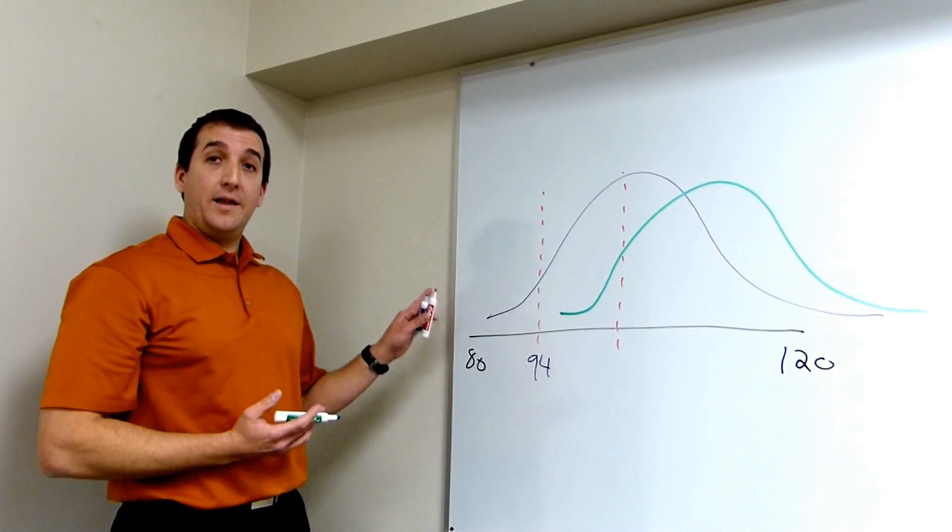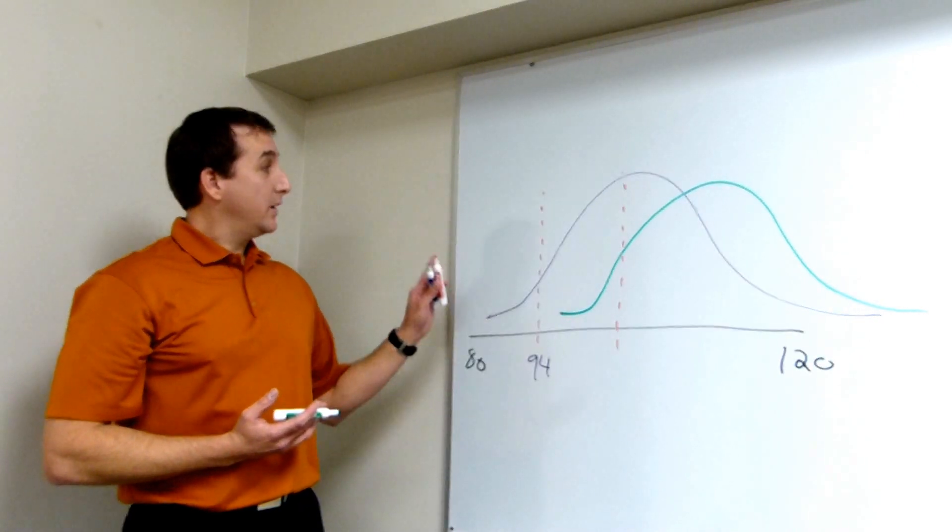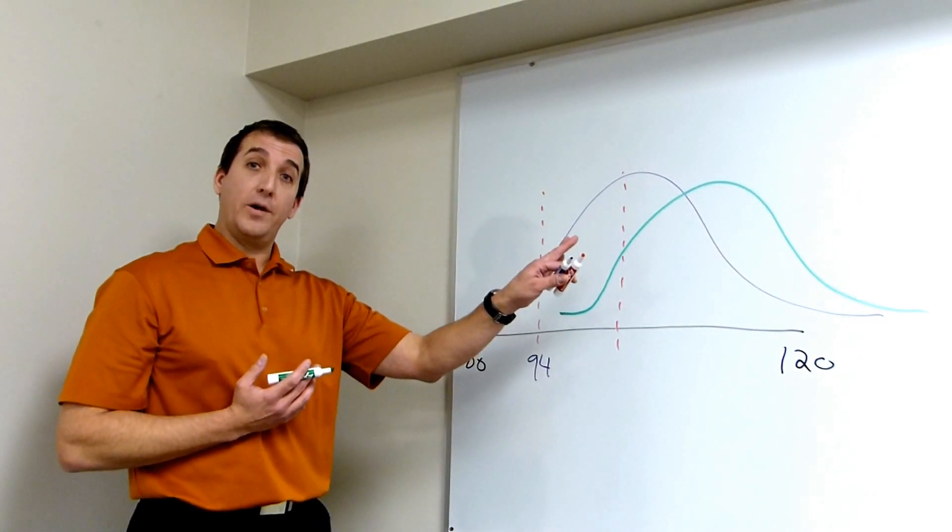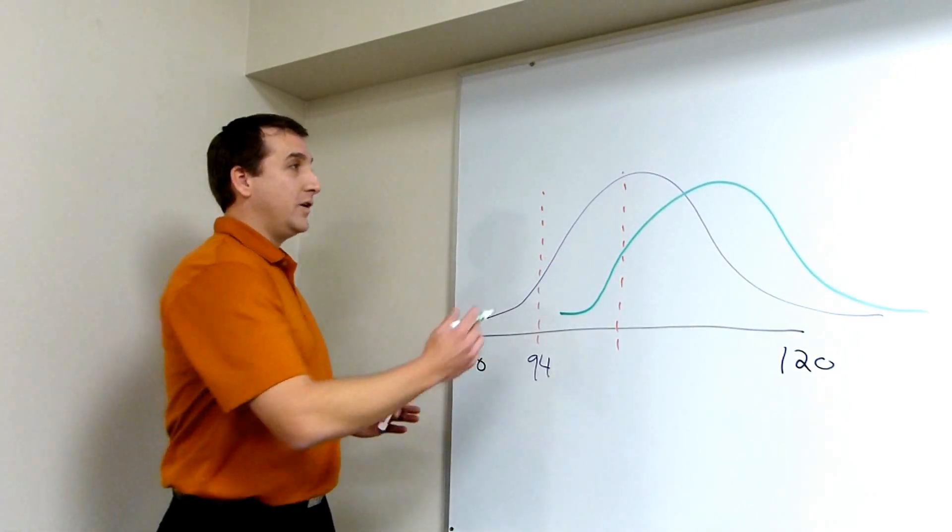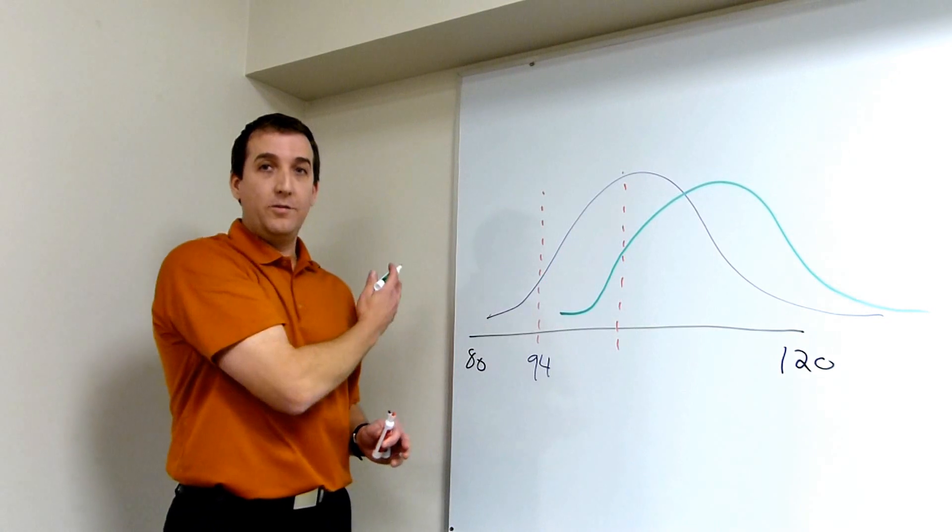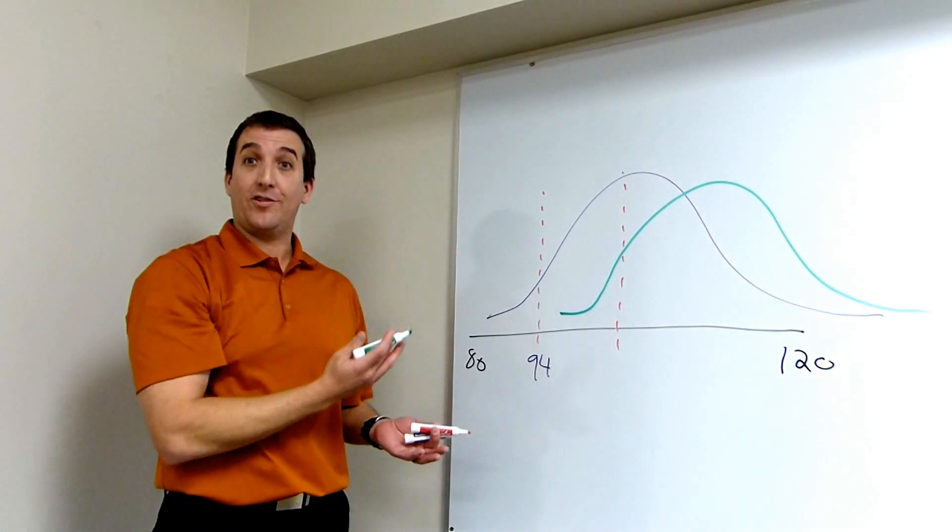Conversely, if you apply the professional cut point to high school players, you will identify way too many people as at risk for injury who actually aren't.